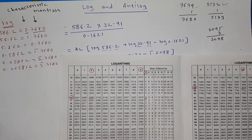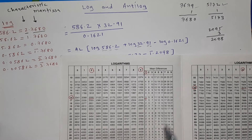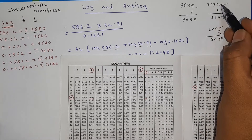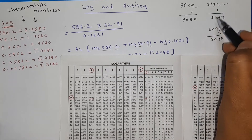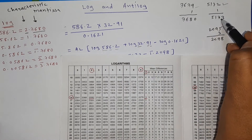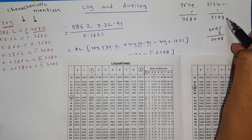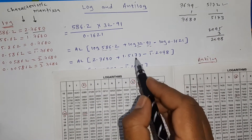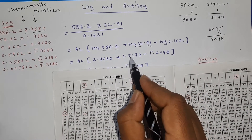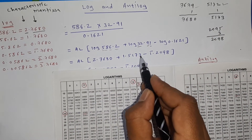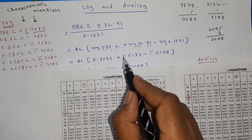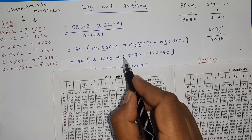From the mean difference for row 32, column 9, with fourth digit 1, we get an addition of 1, so 5172 + 1 = 5173. Therefore the mantissa of log 32.91 is 5173, and log 32.91 = 1.5173.